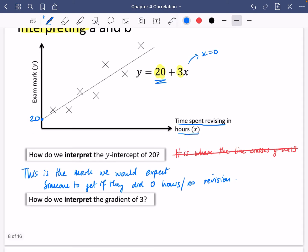And then how do we interpret the gradient of 3? Well, think about what gradient actually means. Gradient means that every increase in x of one unit, y increases by 3. And it's an increase of 3 because of the plus there. Obviously, if it was a negative, it would have been a decrease. So what does this mean in the context?